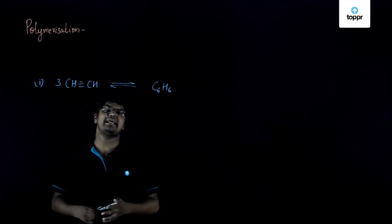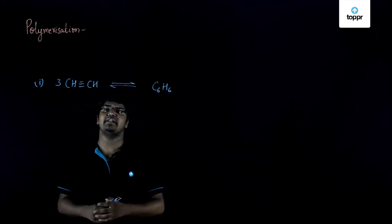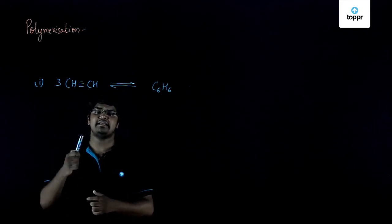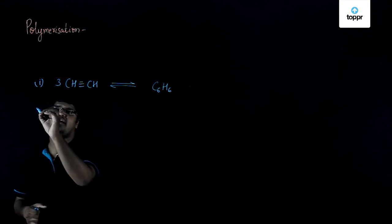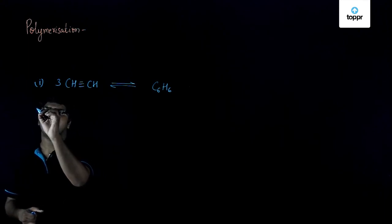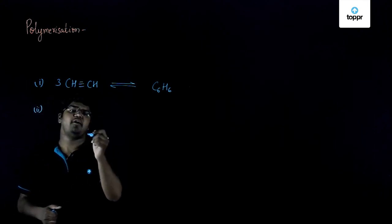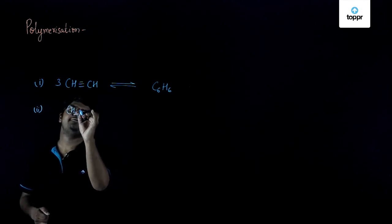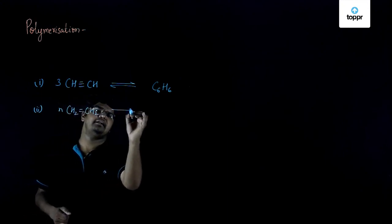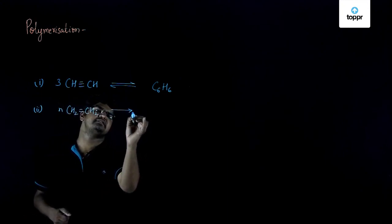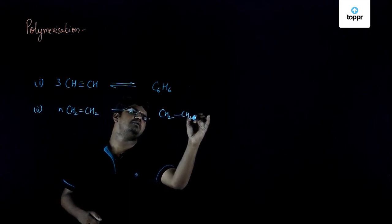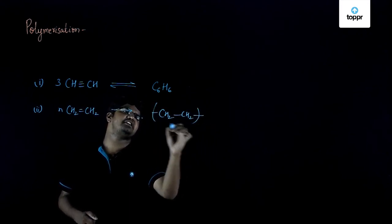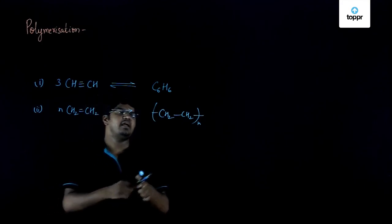These reactions are usually carried out at high temperature and pressure, and this is an example of polymerization reaction. Another example can be the formation of polythene. Polythene is formed by N molecules of ethene and this gives us CH2-CH2, and this chain continues up to N molecules.